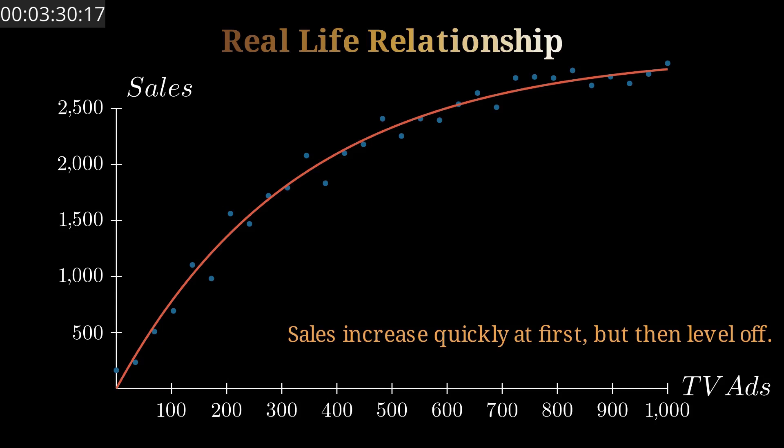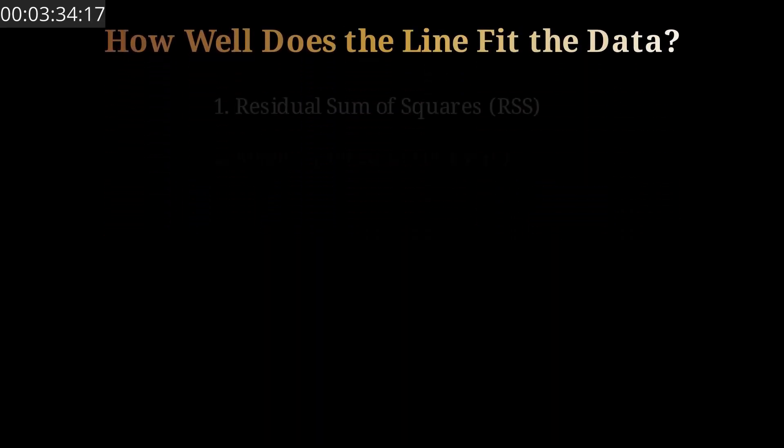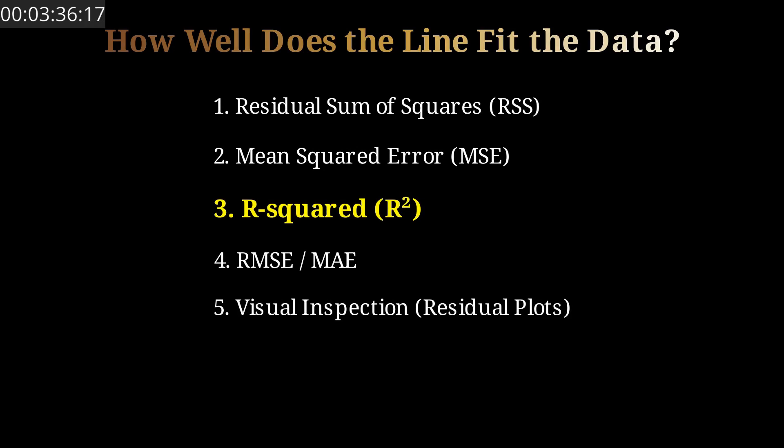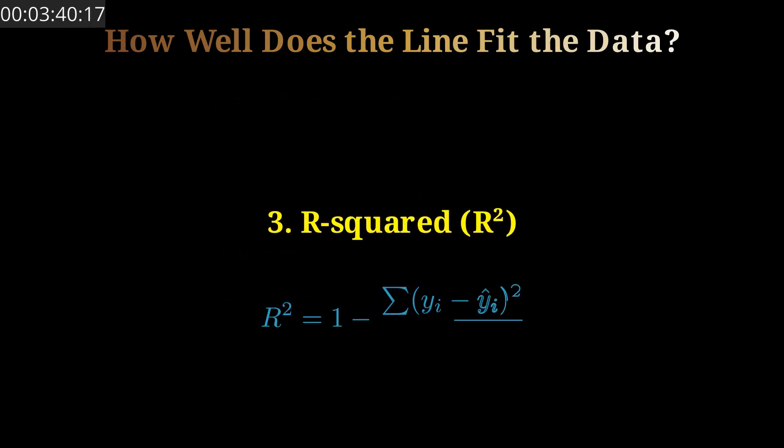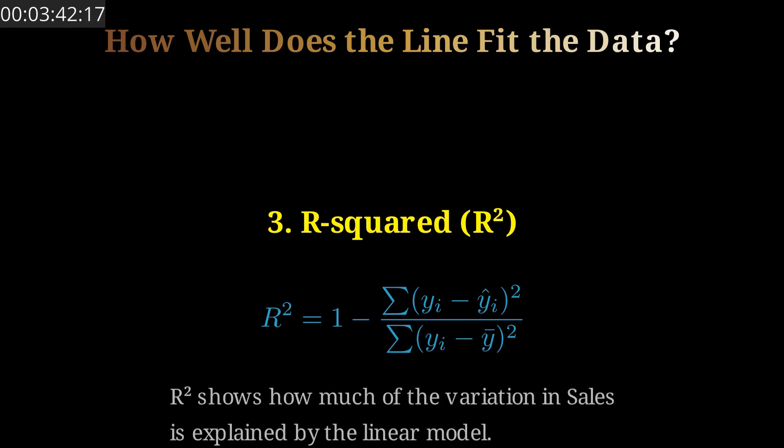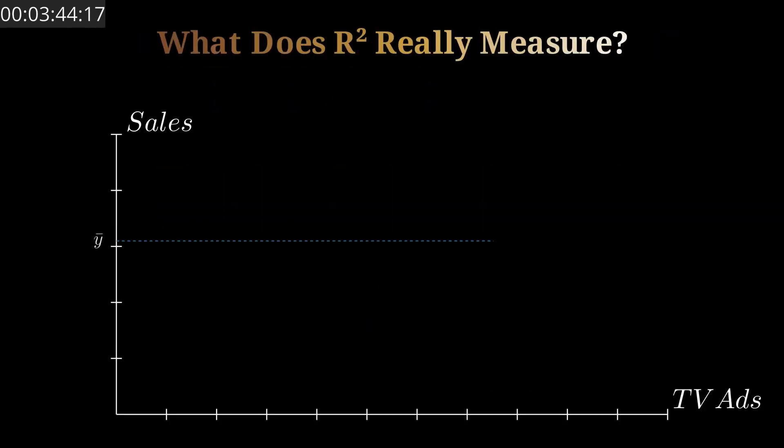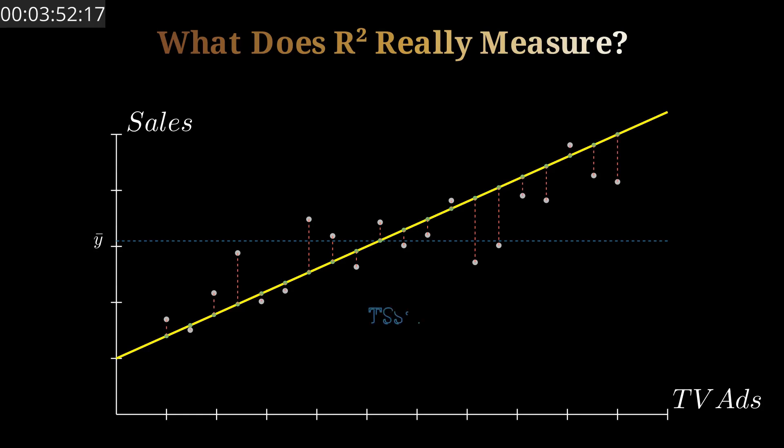These listed methods help us evaluate and fit the regression line. One of them is called R squared, which measures how well the linear regression explains the variability and the variance. As you can see, our raw training data points have a lot of variance, and the R squared measures how well this variance got explained by this straight line. The closer to one, the better the fit.